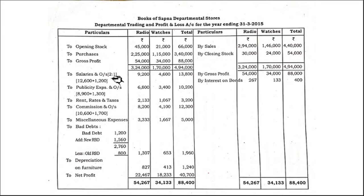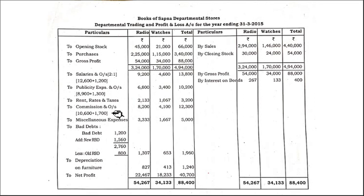Salaries with outstanding are split as 9,200 and 4,600. Similarly, all other expenses — publicity expenses, rent rates and taxes, commission (with outstanding commission added: 10,600 plus outstanding), and miscellaneous expenses — are all distributed in the 2:1 ratio. Whenever expenses are outstanding, we add them before distributing.